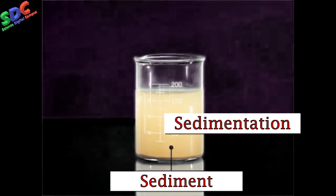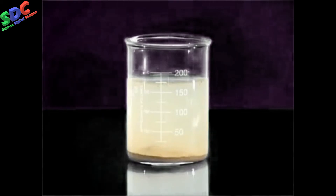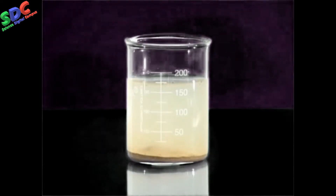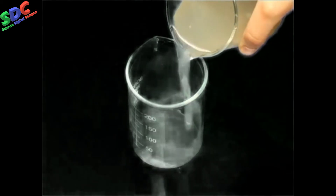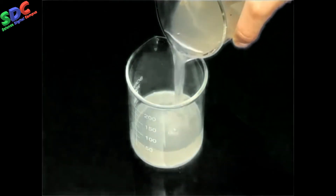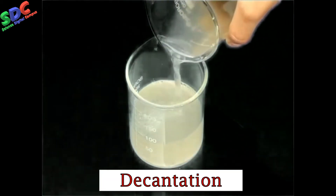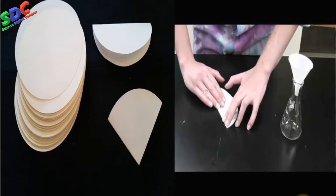We can see clean water above the layer of mud. We then pour out this clean water gently without disturbing the settled impurities — this process is called decantation. The next method is filtration, in which we use filter paper to remove insoluble impurities.